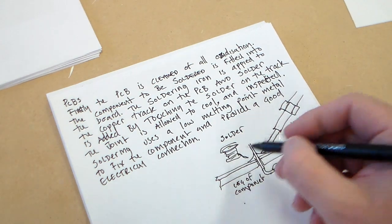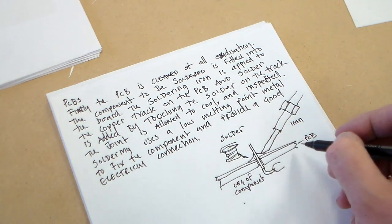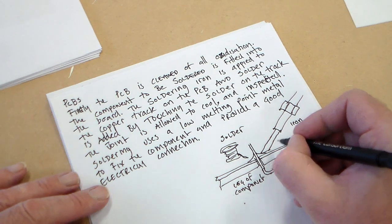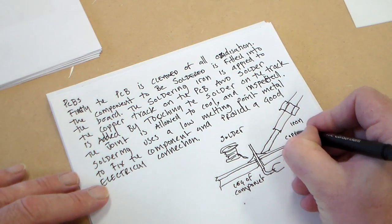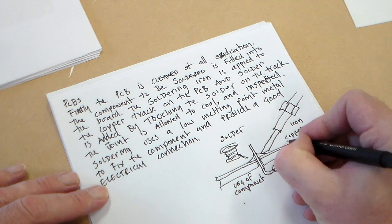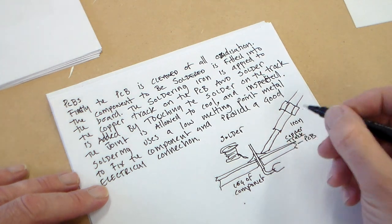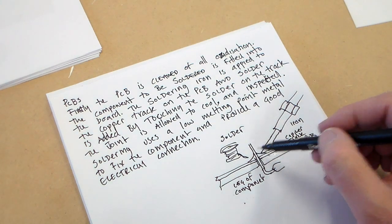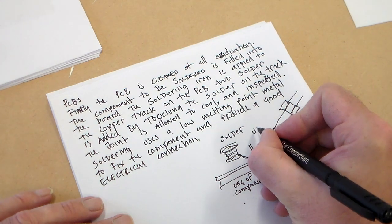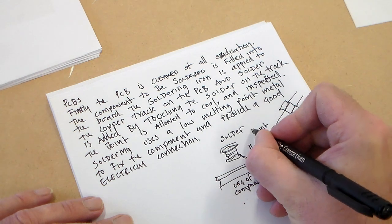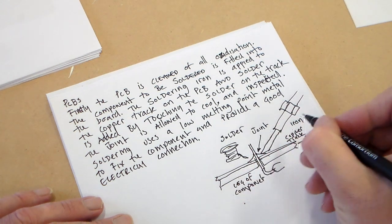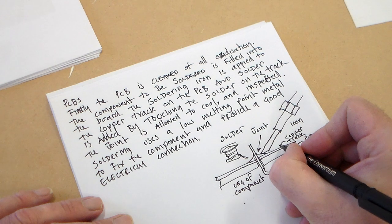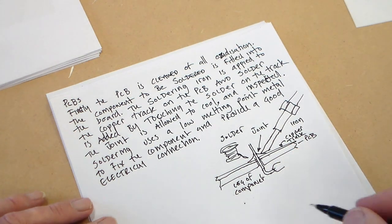So we've got soldering iron, solder, leg of component, PCB, and we could just add the copper track. You can see that. So, we've drawn our solder, our soldering iron, so the soldering iron touching there, and the joint. I think that would probably get us our eight.